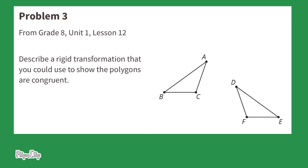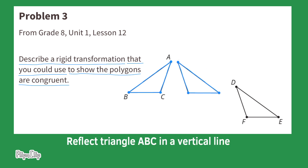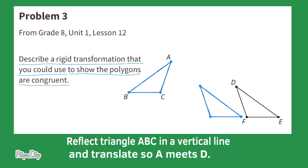Problem number three, from 8th grade, Unit 1, Lesson 12: Describe a rigid transformation that you could use to show the polygons are congruent. Reflect triangle ABC in a vertical line and translate so point A meets point D.